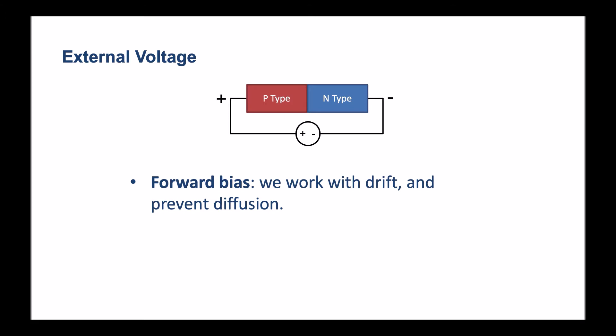This means that we're working with drift and preventing diffusion. What happens here is the depletion region shrinks and conductivity increases. Remember the depletion region is the region of high resistance and prevents current flow. So the more forward bias voltage that we can add to the p-n junction, it means that the depletion region is going to get smaller. And that means the resistance is going to go down, conductivity is going to go up.